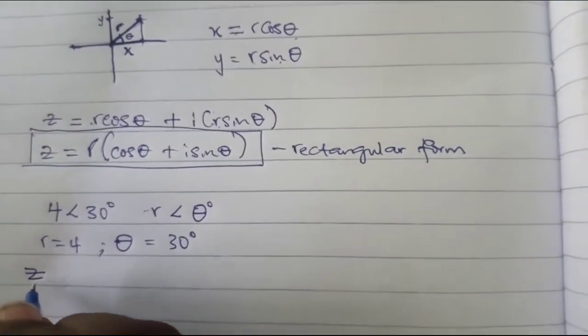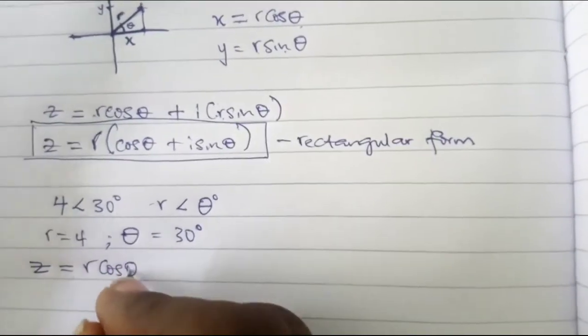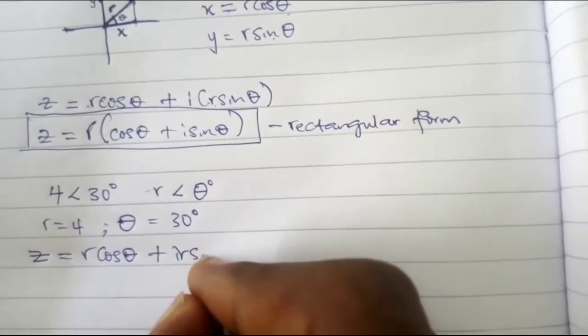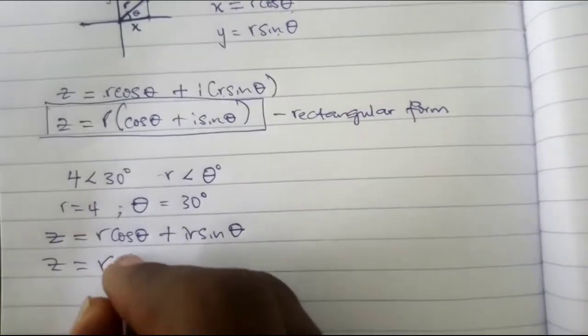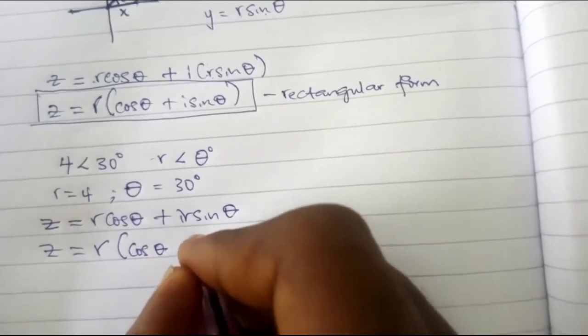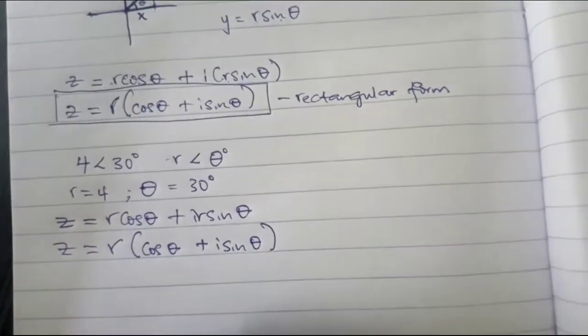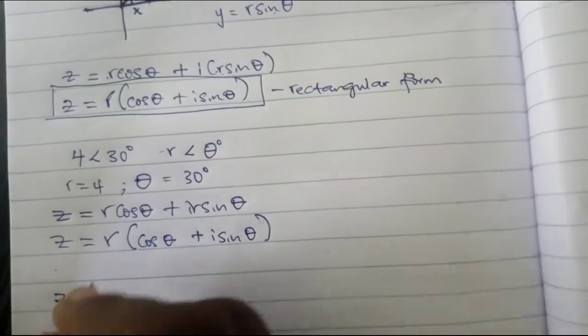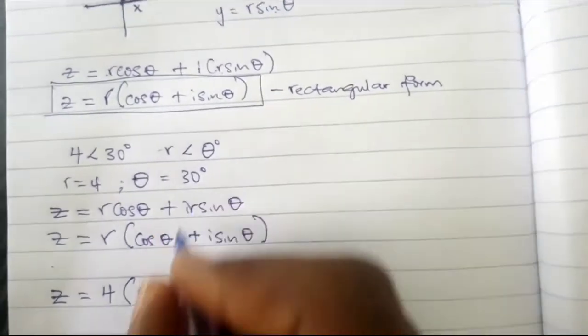So our z converting to rectangular form, remember, is r cos theta plus i r sine theta. Actually we can factor r out to be r times cos theta plus i sine theta. So I guess this will be much easier. To get z equal to, we've gotten our r to be 4, so 4 in brackets cos our theta which is 30 plus i sine theta which is 30 degrees.